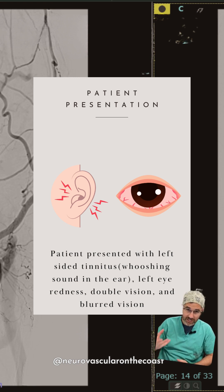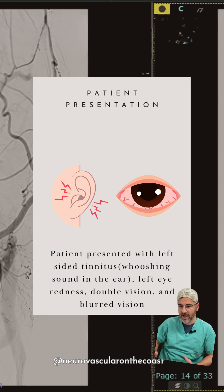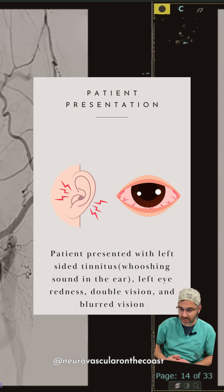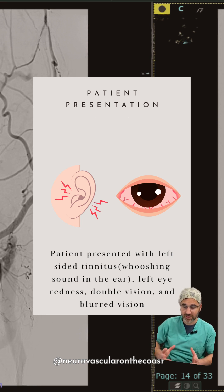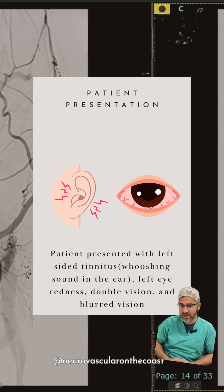She also had a very injected, or red, eye just on the left side, and she certainly was having double vision, also called diplopia. That's caused by the cranial nerves that control the muscles of the eyeball being weakened by the pressure inside the cavernous sinus. They aren't able to work as well, so the eyes don't move in what we call conjugate gaze — meaning they go together. You can also get some blurred vision.